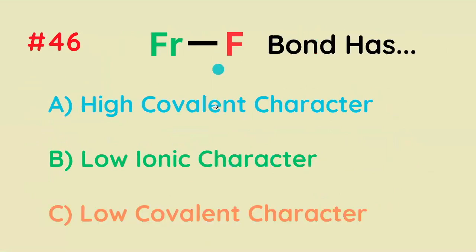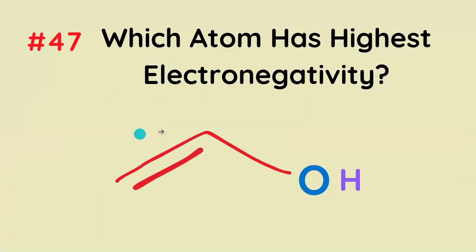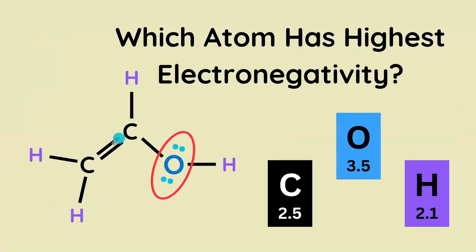The F–F bond has what type of character? The correct answer is low ionic character, which is also high covalent character, and the other two options are the exact same thing. Which atom has the highest electronegativity? Oxygen has the highest electronegativity of all the elements present.